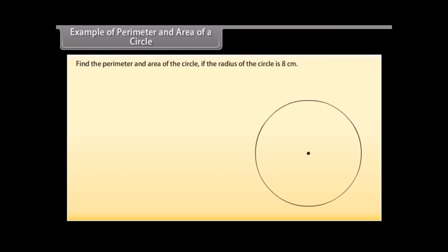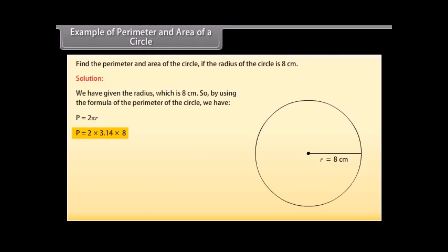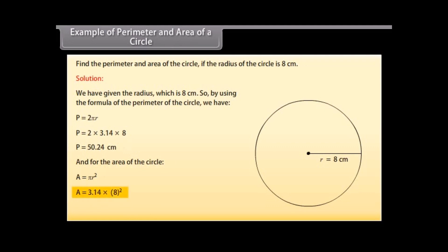Example 2: Find the perimeter and area of the circle if the radius is 8cm. Solution: Using the formula for perimeter, P equals 2πR equals 2 × 3.14 × 8, which gives P equals 50.24cm. For the area of the circle, A equals πR² equals 3.14 × 8², which gives A equals 200.96cm².